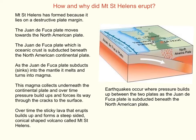So how and why did Mount St Helens erupt? Mount St Helens is formed because it lies on a destructive plate margin. The Juan de Fuca plate moves towards the North American plate. The Juan de Fuca plate is denser because it is oceanic, and so it is subducted beneath the North American plate, which is the lighter continental plate. As the Juan de Fuca plate subducts into the mantle, it melts and turns into magma.